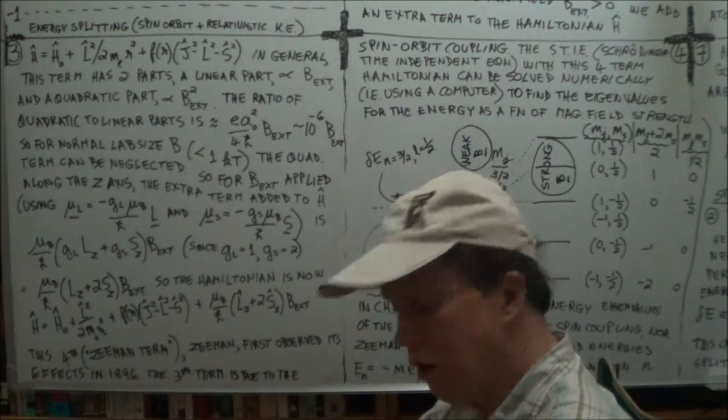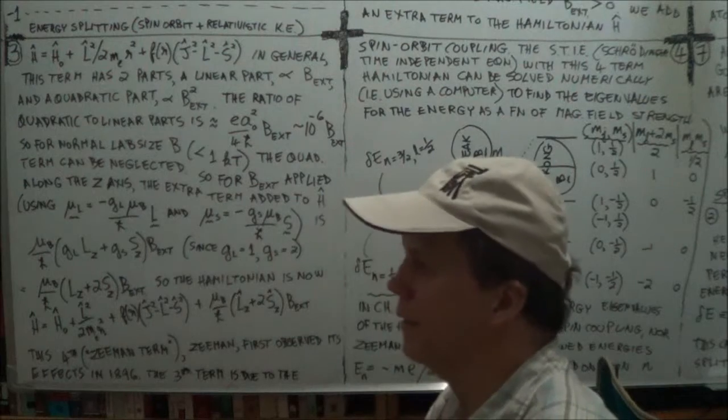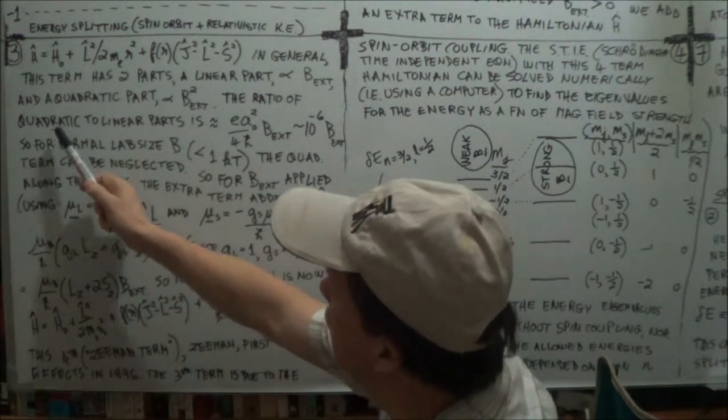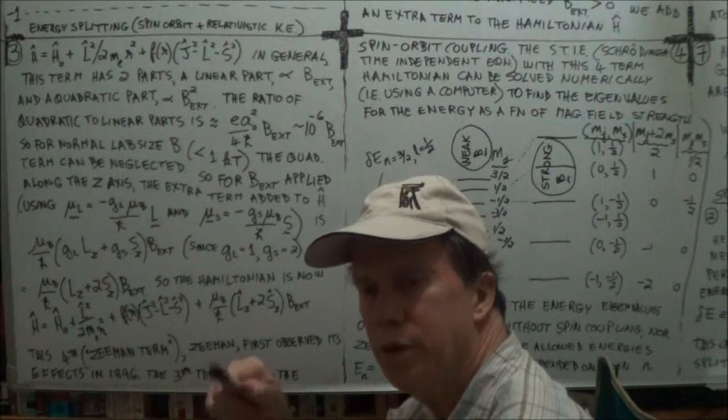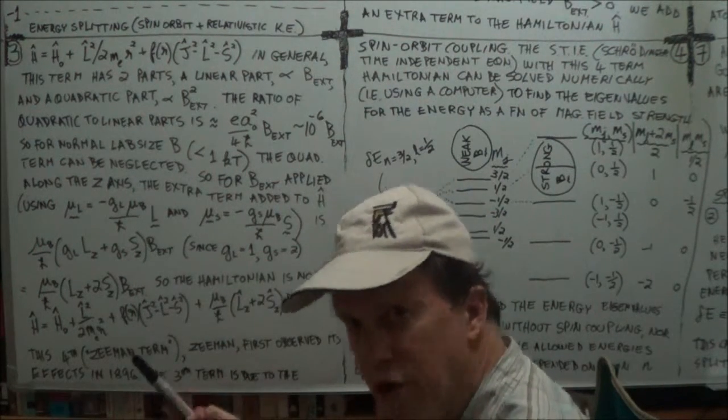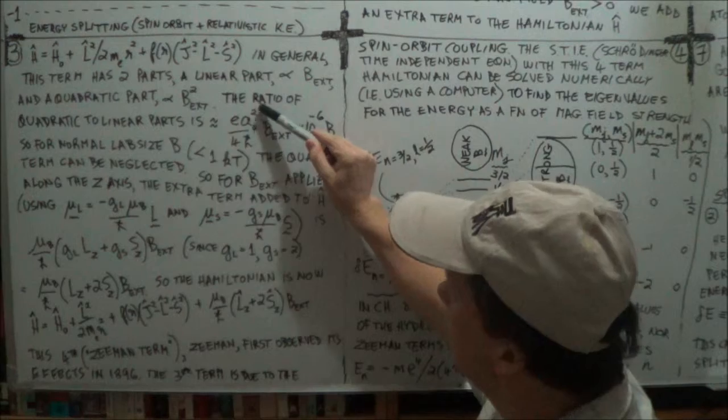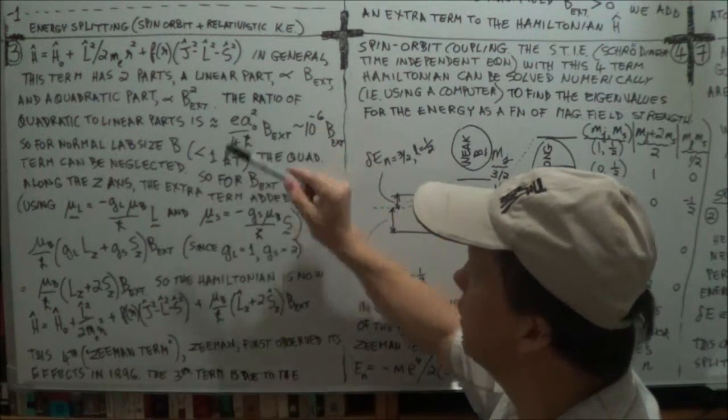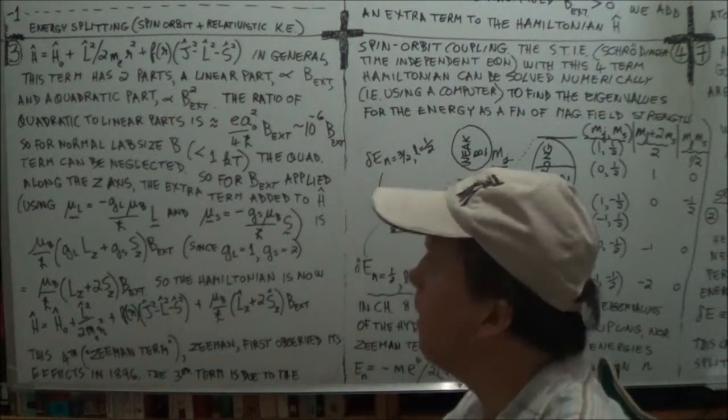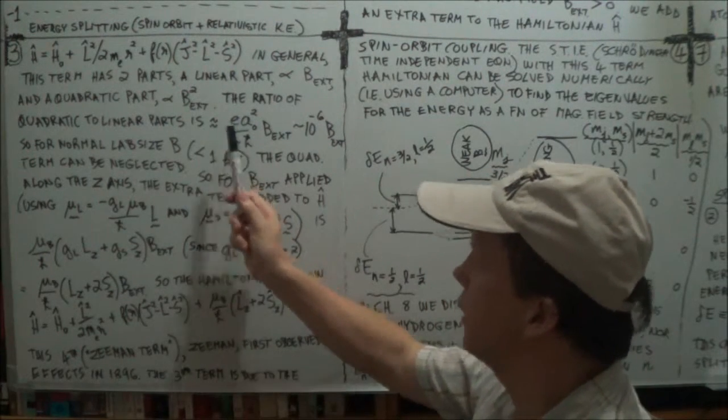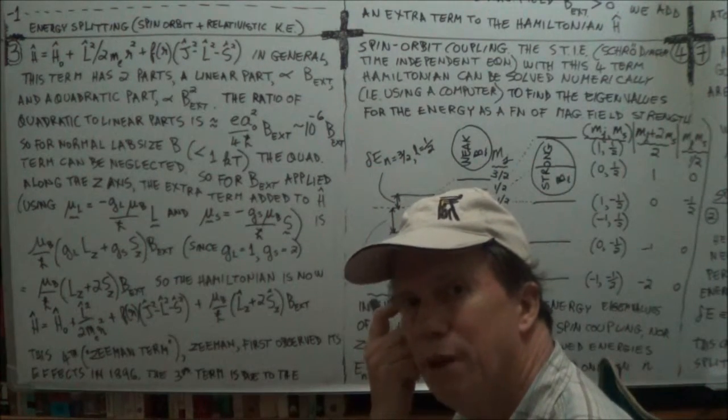Now when you calculate the ratio of the strength of these terms, the quadratic divided by the linear term, so the B squared term divided by the B term, you'll get something like this. So you get some constant times B. And this number here, when you actually plug in the numbers, so a naught is the Bohr radius, charge electrons and so forth, it works out to be about a millionth, ten to the minus six of B. In other words, it's so small you can pretty well forget about it.